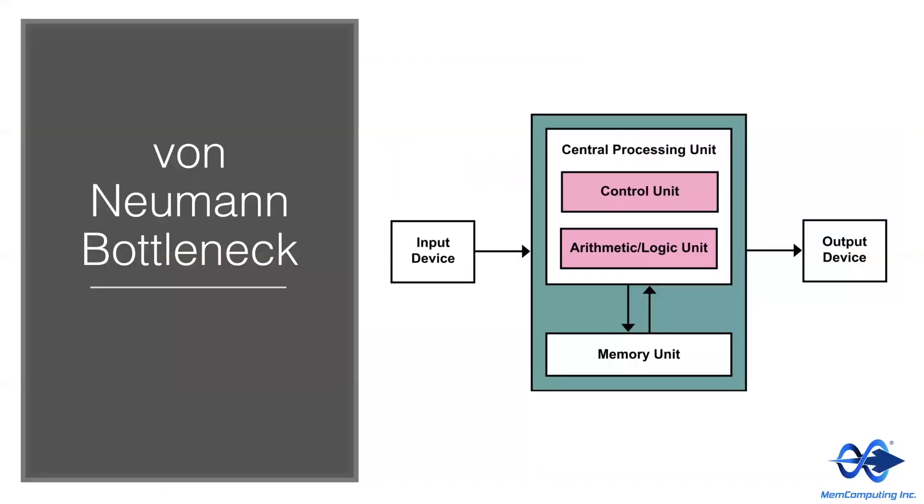In computer science, it's well known that our computers face a problem known as the von Neumann bottleneck. Recall that the memory and CPU are separated from one another in the von Neumann architecture. This separation results in a significant communication overhead where the CPU must continually push and pull data from memory. For the most complex computations that industry faces, this bottleneck causes computational time to grow exponentially while the input variables may only be growing one at a time.